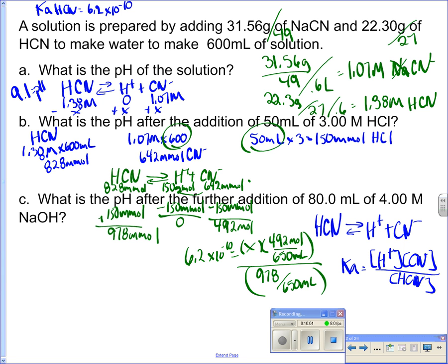And then I can work it out. But look, there's two 650s. So I can actually cancel those out. And so now all I have to do is multiply by 978 and divide by 492. And that's going to give me my H+ value, which is my X, which is my H+ value, which equals 1.23 times 10 to the minus 9.